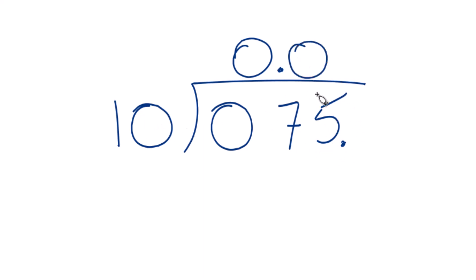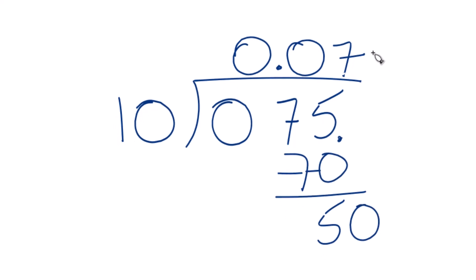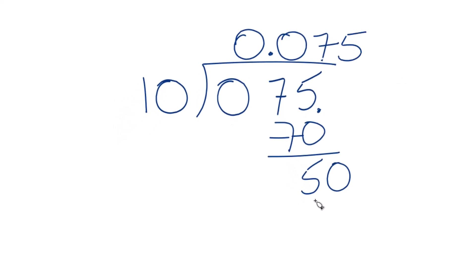So now 10 goes into 75 7 times. 7 times 10 is 70. We subtract and we get 5, move over 1, call this 50, and 5 times 10. That gives us 50, so we subtract no remainder there.